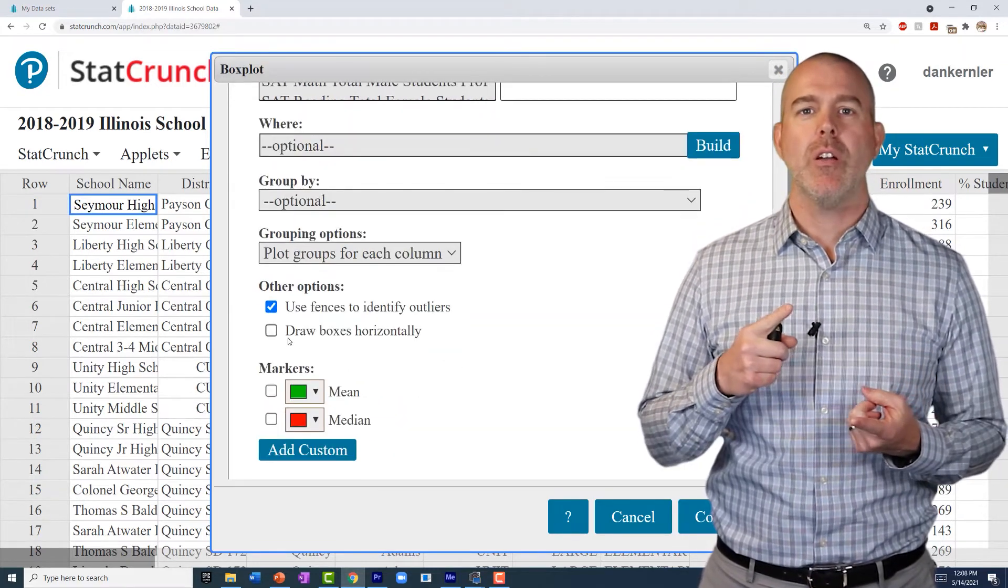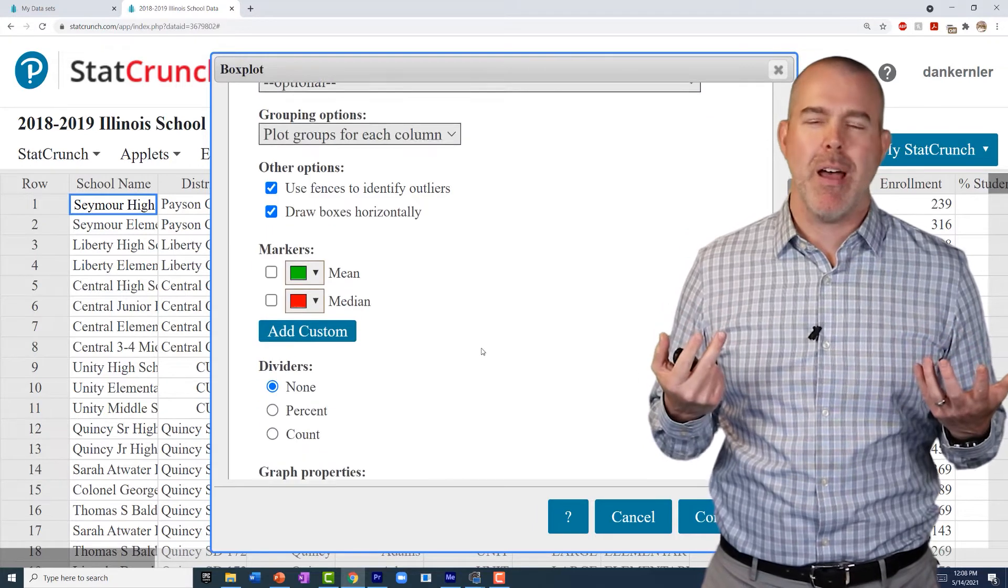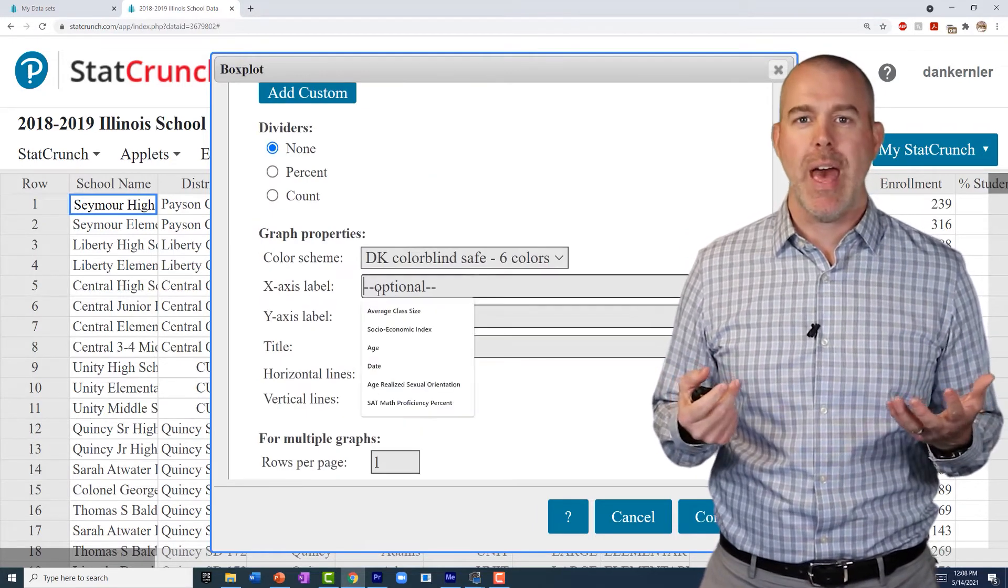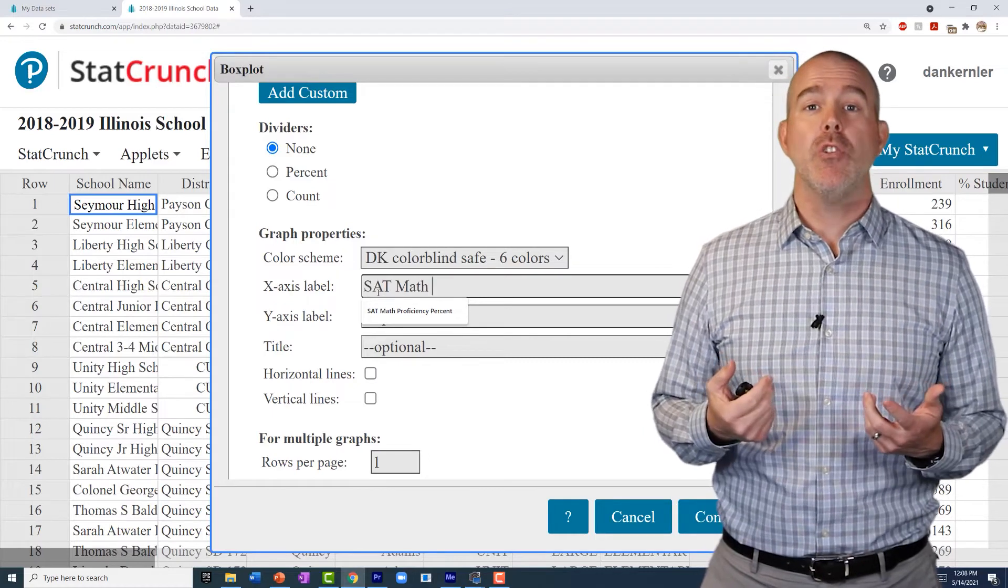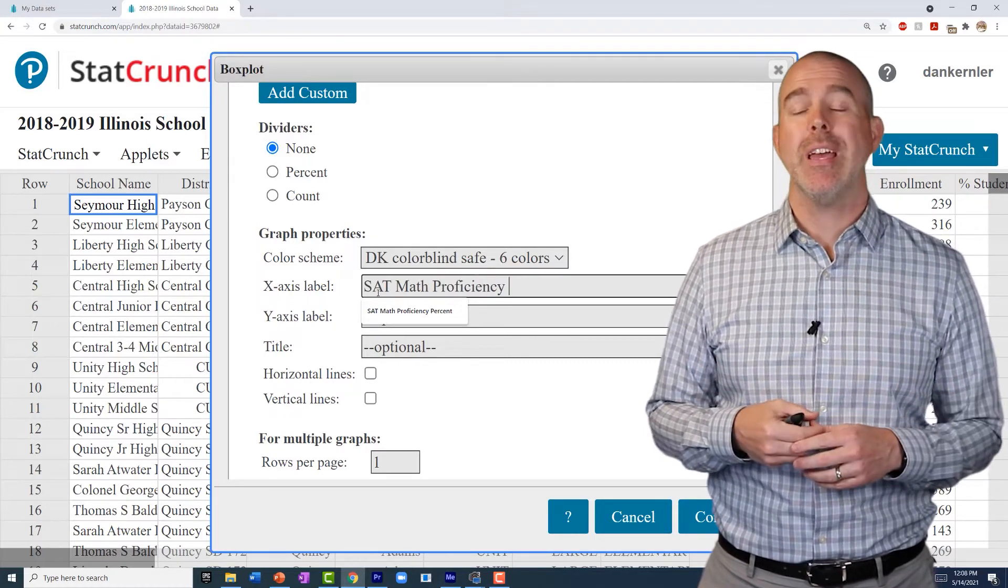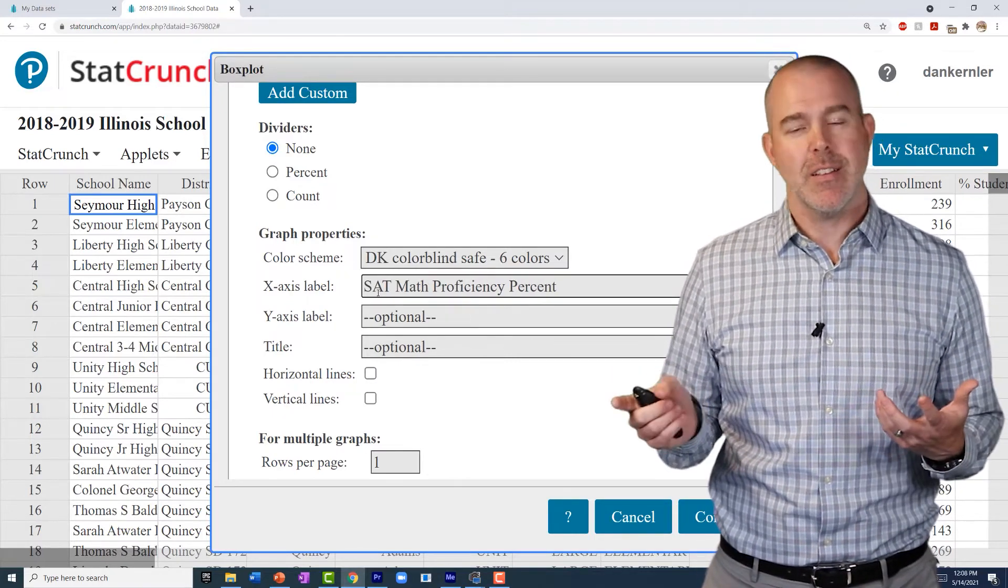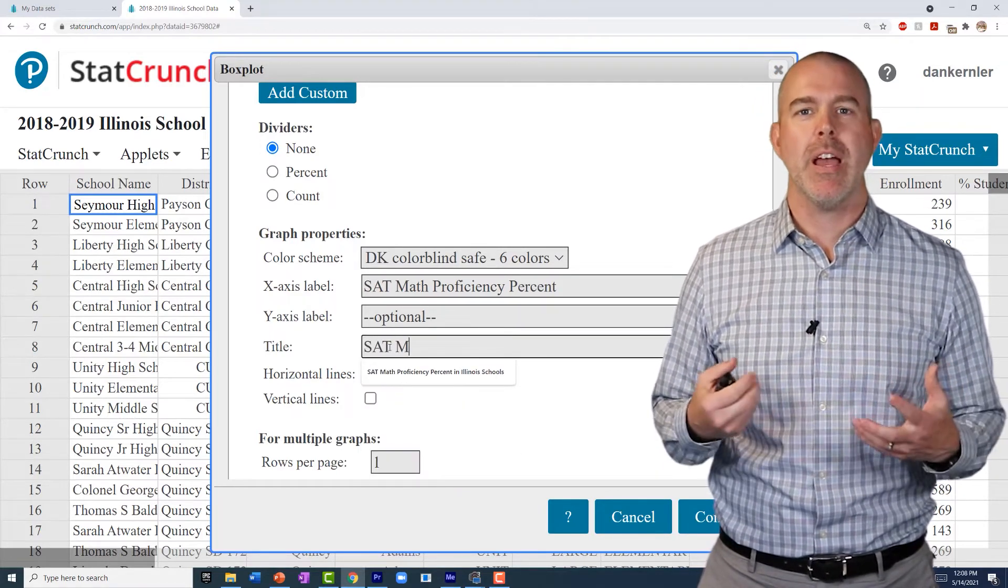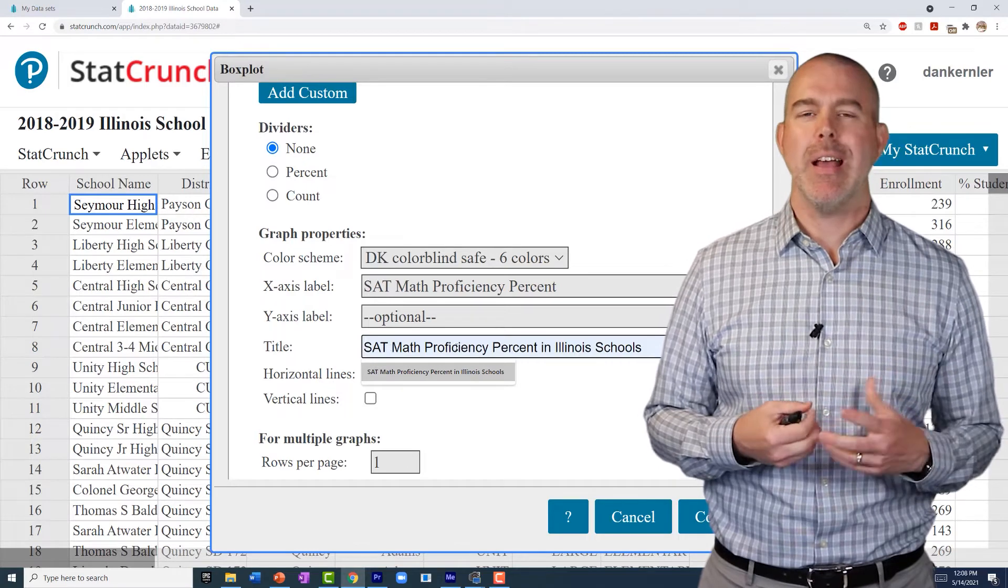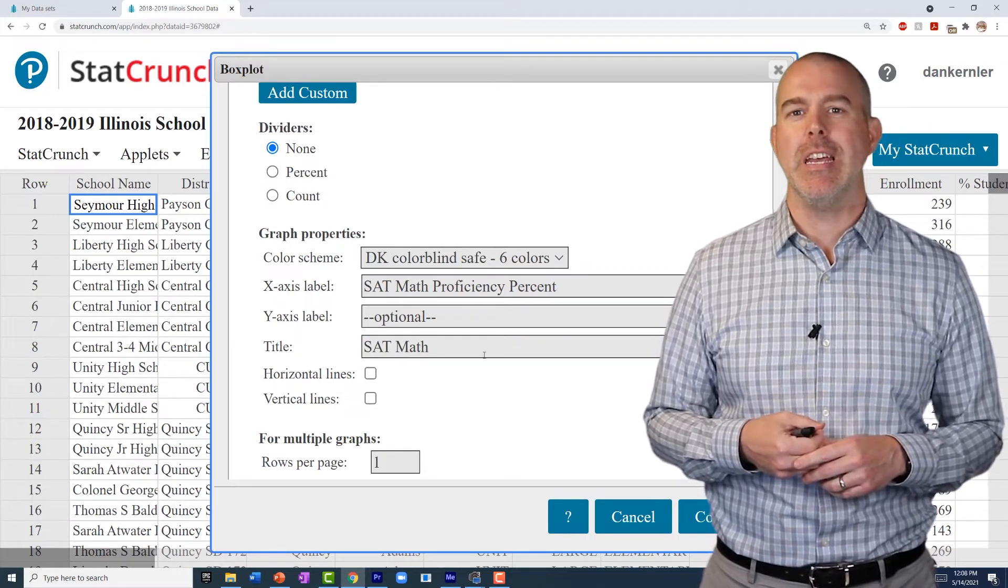And then I like to do graphing it horizontally. That's just my personal preference. There's no need to do that. You can see there's an option there to indicate outliers or not. And like usual, we'll put a nice title here. We can label the x-axis since I'm doing mine horizontally. That's the percent that are proficient. And then our nice title, something about SAT math proficiency in Illinois.